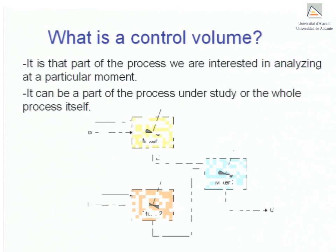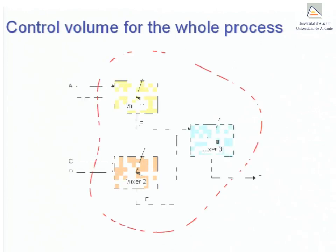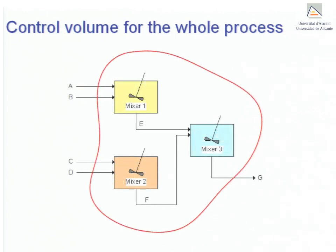Let's look at all the control volumes that may be drawn for our current example. The red line encloses the entire process. It defines that control volume which contains the whole system. It is very important that the boundary of a given control volume cuts all the streams entering and exiting as shown in the drawing. Since the red line cuts all the streams entering or exiting the process, it has been drawn correctly.